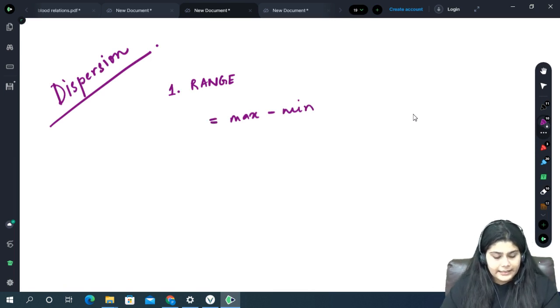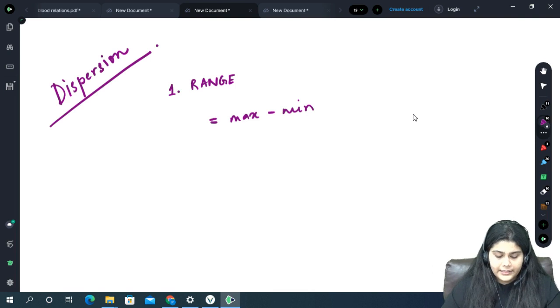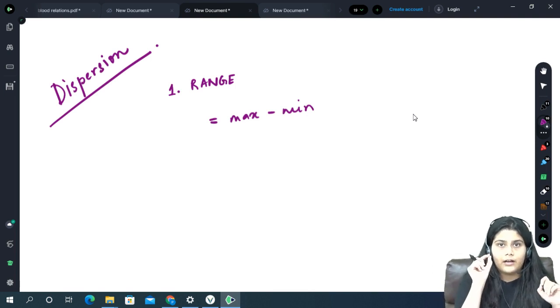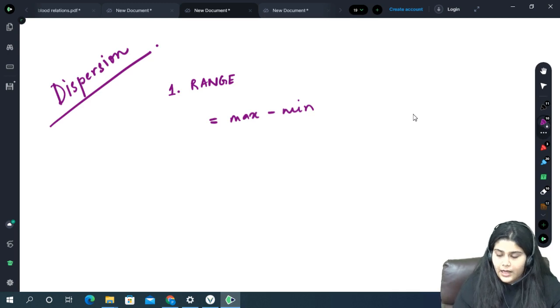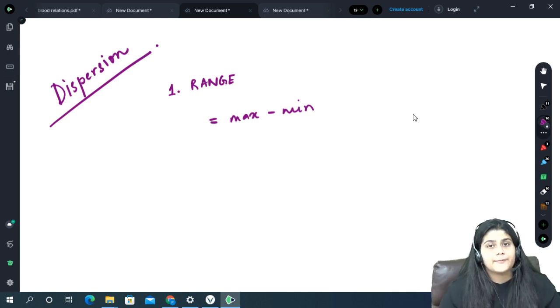That is it, range is just that. It is the maximum value in our data minus the minimum value in our data.